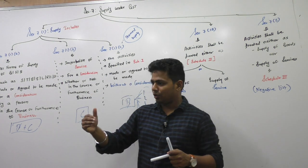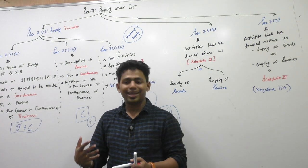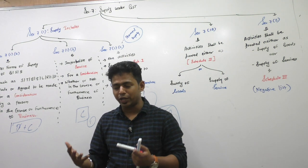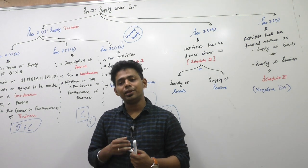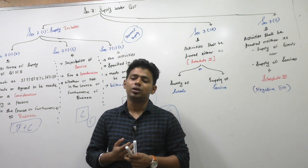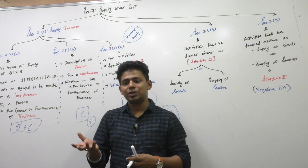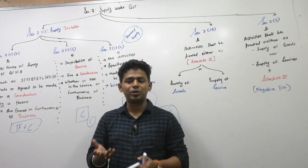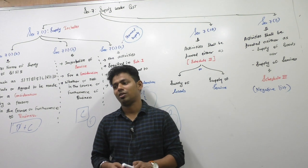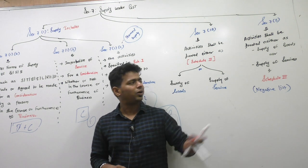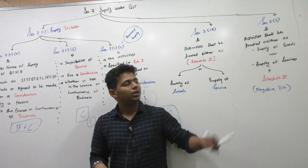For example, your father or brother — they get up every day, get ready, and go to work. Is it an activity? Yes. For a consideration? Yes. Should it be taxable? No. Is it a commercial activity? Yes. But on employment, is there GST? No — employees are not paying GST. Why? Because it is covered in Schedule 3. Schedule 3, first point: activities performed by an employee to an employer during the course of employment.